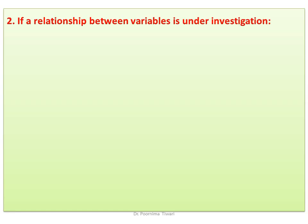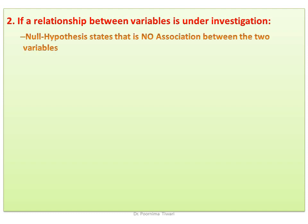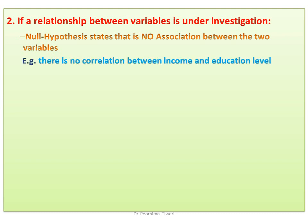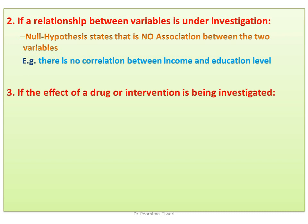If the purpose of the research is to see the relationship between variables, then the null hypothesis states that there is no such association. For example, there is no correlation between the income and the education level of a person.